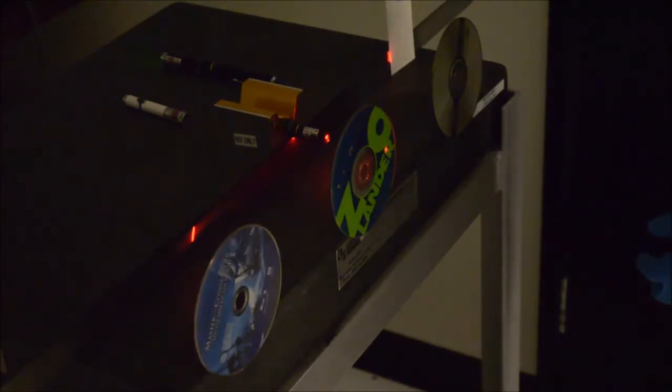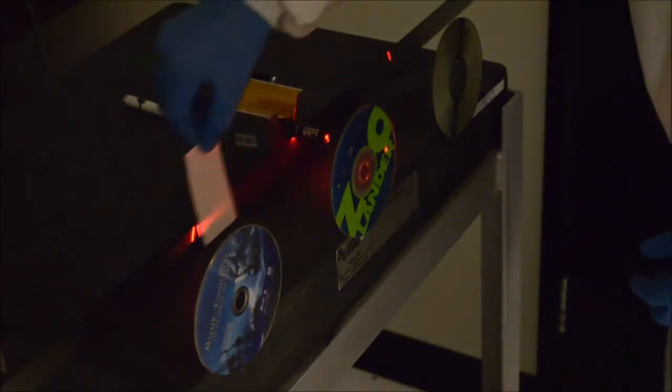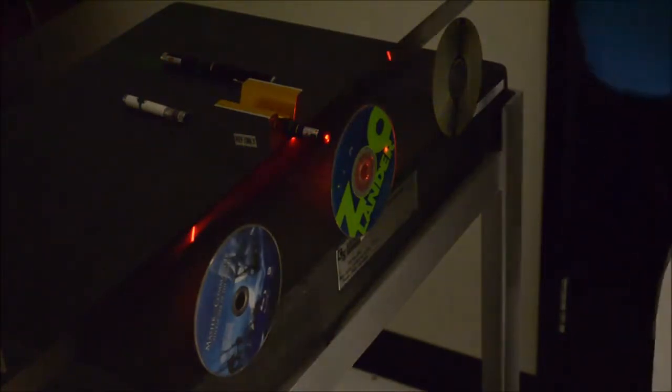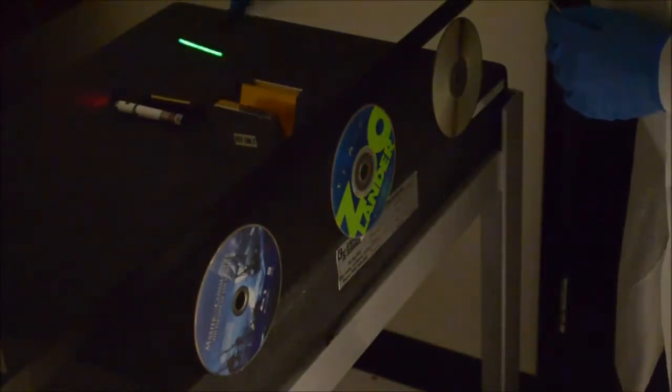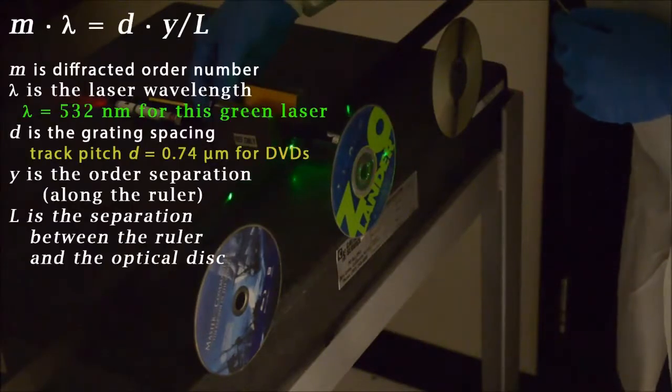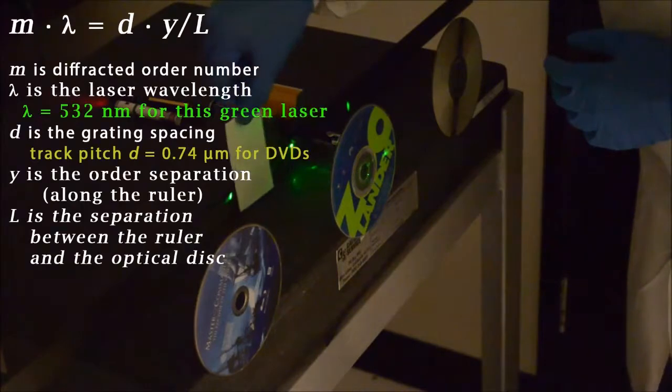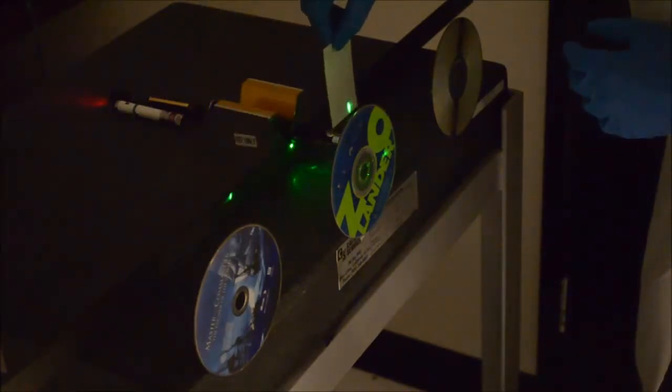You can see the minus one order and the plus one order for the red light. If we do this for the green light, you'll see that it's actually pulled in significantly. We have the zeroth order lined up and then the minus one and the plus one order of the green light.